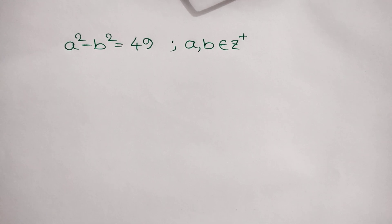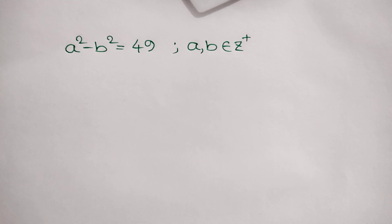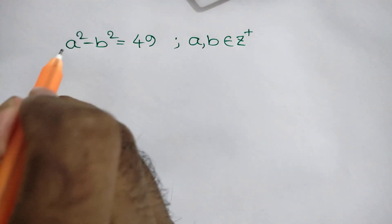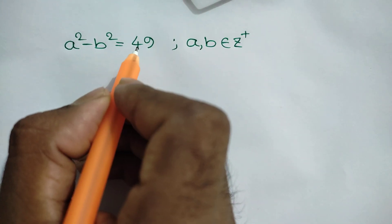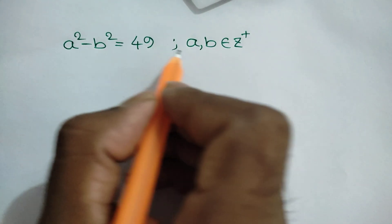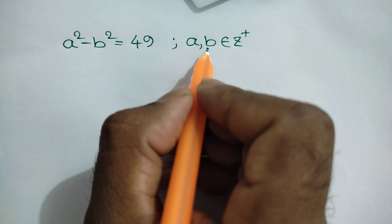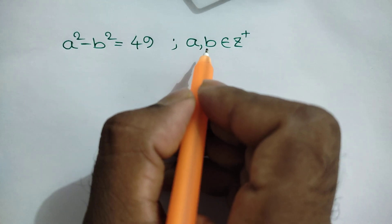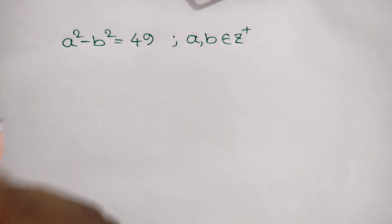Hi everyone. In this video I am going to show how to find the value of a and b, where a squared minus b squared is equal to 49, where a and b are positive integers.